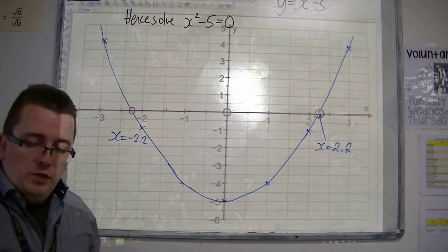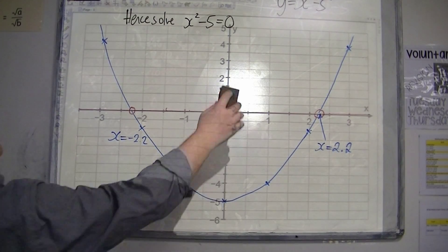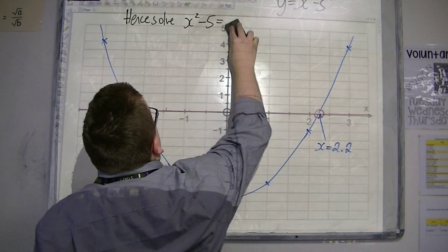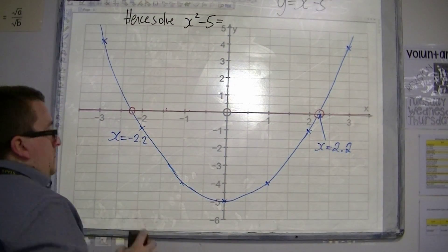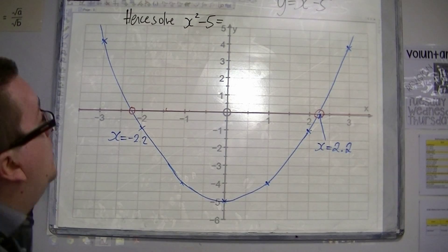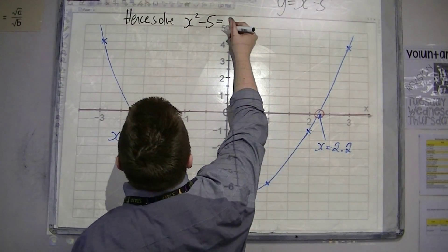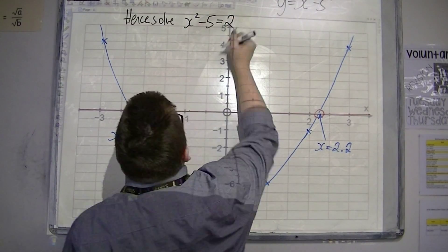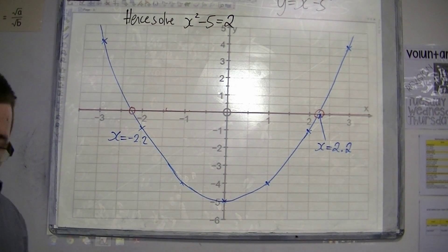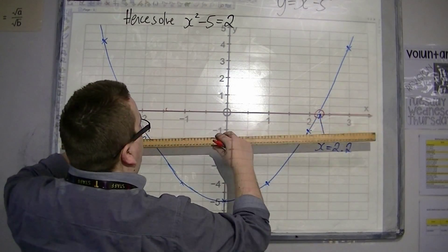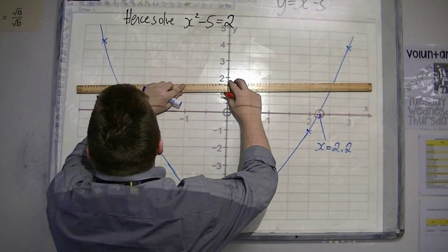It could be changed. If I change the problem so that instead of x squared minus 5 is 0, I'm looking at x squared minus 5 equals 2. Then what's happening now is that instead of looking at y is 0, y is now 2.